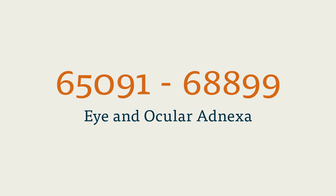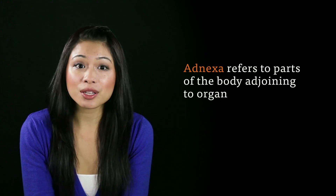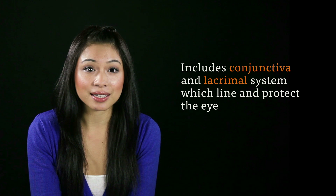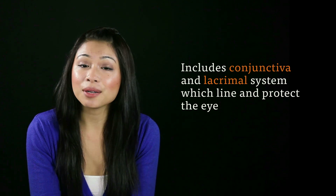Codes for the eye and ocular adnexa are found in the 65091 to 68899 numerical range of the CPT manual, toward the very end of the surgery section. Adnexa refers to the parts of the body adjoining the organ, so the subsection on the eye and ocular adnexa includes procedures on the eye itself, in addition to the ocular muscles and eyelids. This subsection also includes the conjunctiva and lacrimal system, which line and protect the eye.